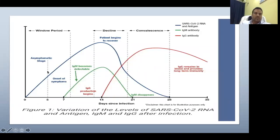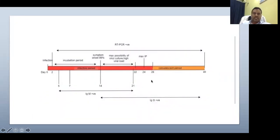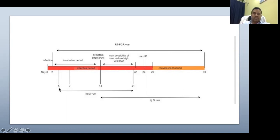Based on this chart: if you test on day five, only PCR will be positive — IgM and IgG will be negative. If testing on day 13, PCR will be positive and IgM will be positive. If testing around day 21, PCR, IgM, and IgG will all be positive. The incubation period is around 14 days. Maximum virus load is between 14 to 21 days, maximum incubation period around 24 days, and some patients' PCR will be positive up to 40 days. IgM is positive from about day 5 to 21, IgG from day 14 onwards and persisting.